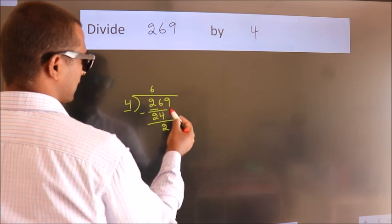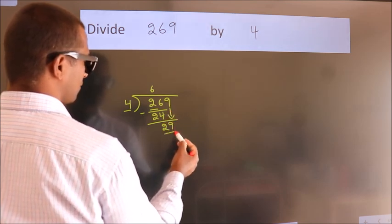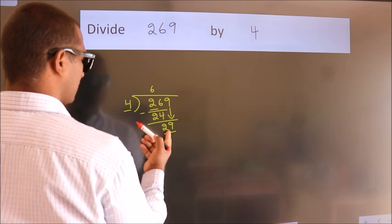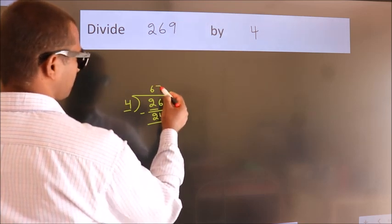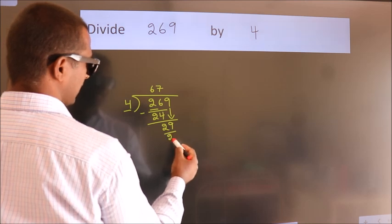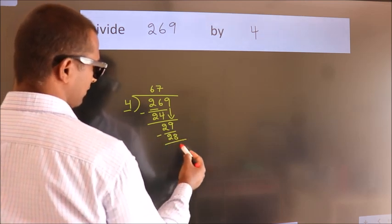After this, bring down the next number, 9, giving us 29. A number close to 29 in the 4 table is 4 times 7 equals 28. Now we subtract and get 1.